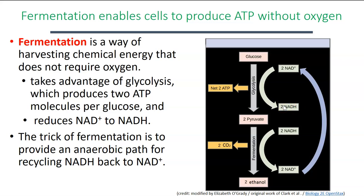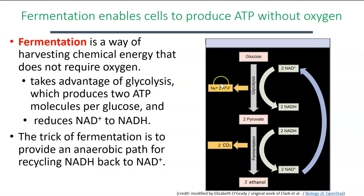Normally yeast would oxidize the NADH during oxidative phosphorylation, but that can only happen if oxygen is present. If oxygen is not present, yeast will instead take the NADH and oxidize it during fermentation — NADH donates electrons, pyruvate accepts those electrons, and NAD+ is recycled so they can continue to do glycolysis. This step where NADH is oxidized and pyruvate is reduced is called fermentation. In the process, yeast also make carbon dioxide and ethanol.